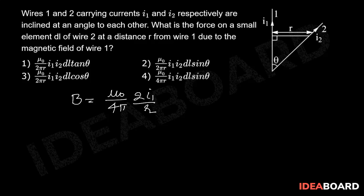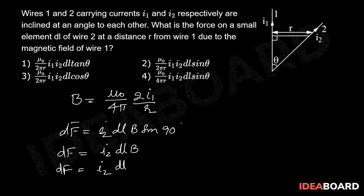Force on element dl bar is dF bar equal to I2 dl B sin 90 degrees. That is equal to I2 dl into B, but B equal to I2 dl into μ₀ by 4π into 2I₁ by R.